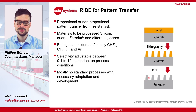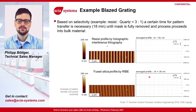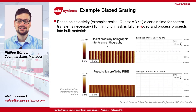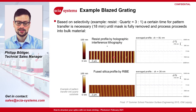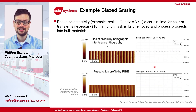You can also tune your process to achieve a non-proportional pattern transfer. On this slide you see an example of such a non-proportional pattern transfer. A set of parameters were chosen to achieve a selectivity between the photoresist and the quartz substrate of 3:2:1. Here you can see how this is used to produce a high-efficiency phase grating. The step height of the photoresist of 81 nm is tuned according to our selectivity to a step height of 26 nm.